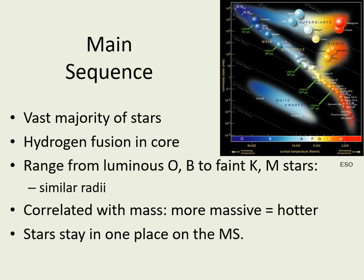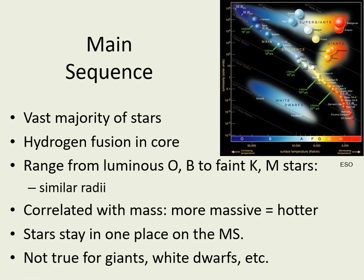Stars don't evolve up and down the main sequence. Note that this is not true for non-main sequence stars — it's very hard to tell from a star's spectral type what the mass of a giant or supergiant will be, since a star of a given mass moves back and forth along these parts of the HR diagram.